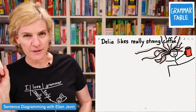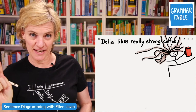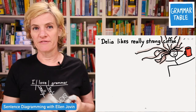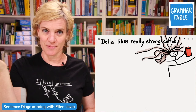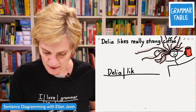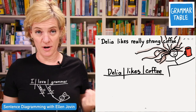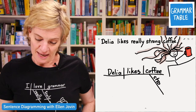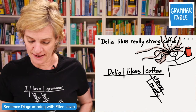One important thing to remember is that adverbs can modify verbs, adjectives, or other adverbs. The adverb in this sentence is 'really' — it has that common sign of an adverb, the -ly ending. Delia is the subject, likes is the verb, and coffee is the direct object. Strong is an adjective, and 'really' tells you how strong — so it is an adverb modifying the adjective strong. And now we have a new structure in our diagram.